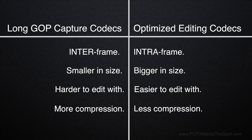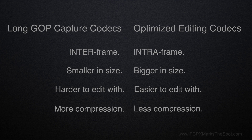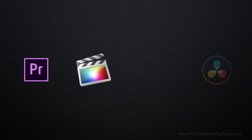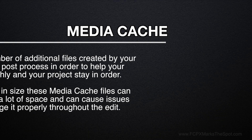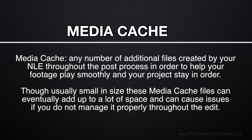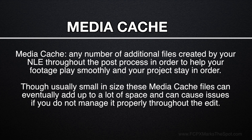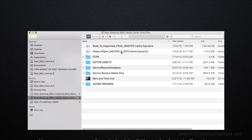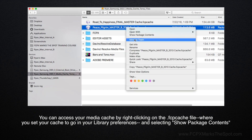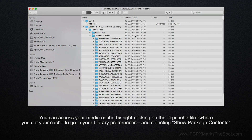Final Cut, along with all other NLEs on the market, create what are known as media cache files. This is largely done in the background without much of your knowledge, and can end up filling up your hard drive and bogging your system down if you're not careful. These files are generally things like database files, actual images of the waveforms you see in the timeline, thumbnails of video clips, and other such metadata.